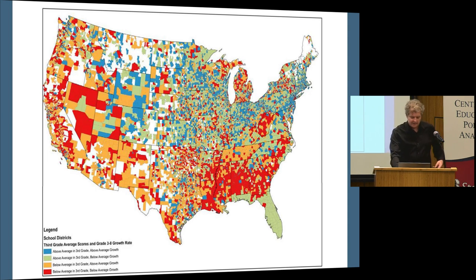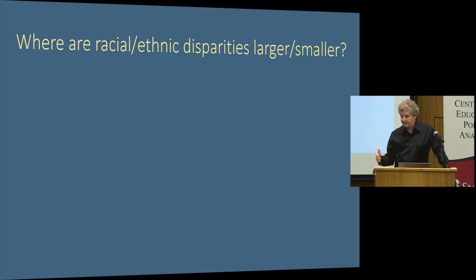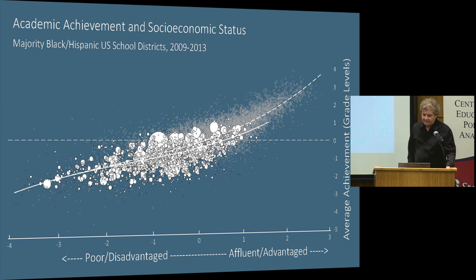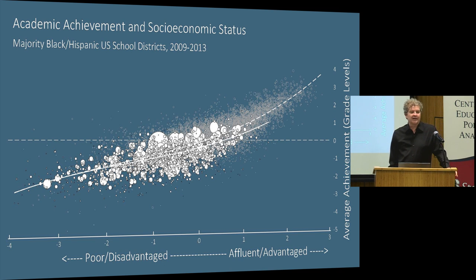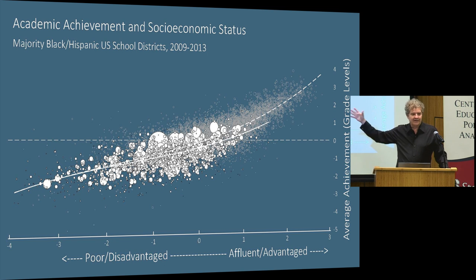The last thing I want to discuss is racial and ethnic achievement gaps. First, a striking observation: if you look at all school districts that are majority minority — that is majority black and Hispanic — there essentially aren't any that are affluent or upper middle class. There just aren't affluent communities in America that are predominantly minority. Most black and Hispanic students go to school districts that are on average well below the poverty line.